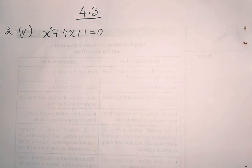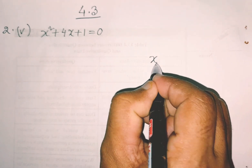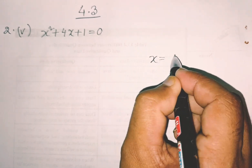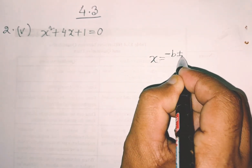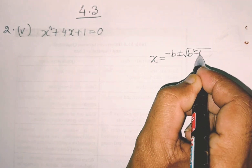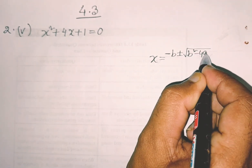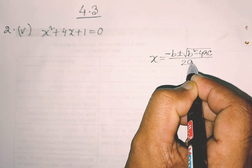The quadratic formula is: x equals minus b plus or minus root over b squared minus 4ac, divided by twice a. Okay?